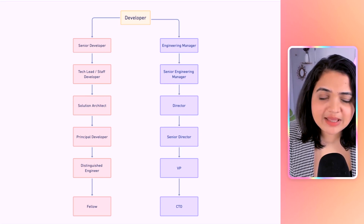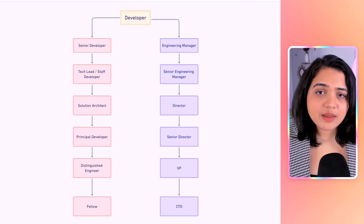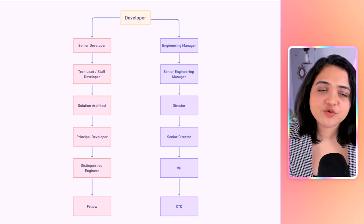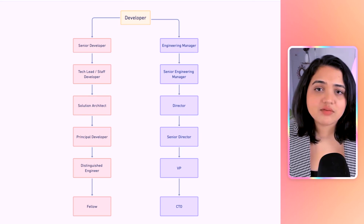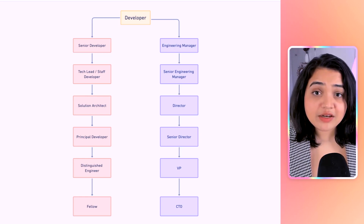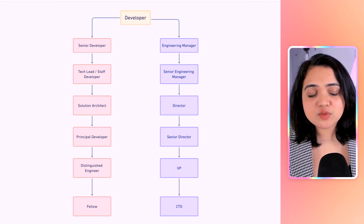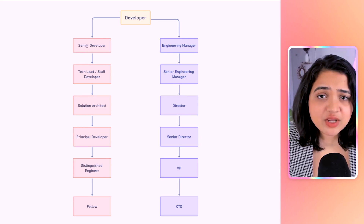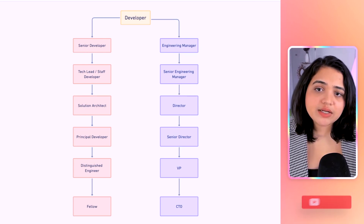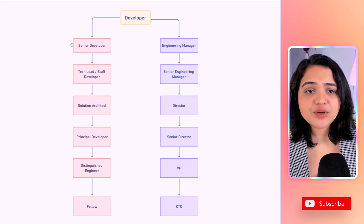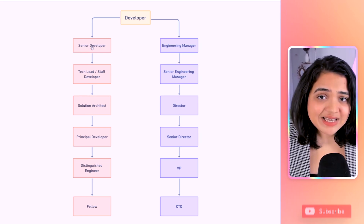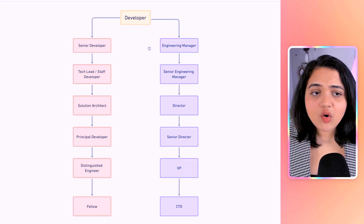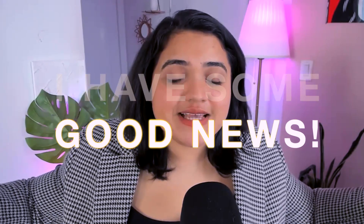One path is called the individual contributor path and the other is the leadership track. A lot of times the IC path has fewer levels compared to a leadership path, and that is why many developers end up becoming managers — because they don't know how else to grow. You need to find the right company where these levels are properly defined so you can keep growing. As a developer, you can go from entry level to intermediate to senior developer.